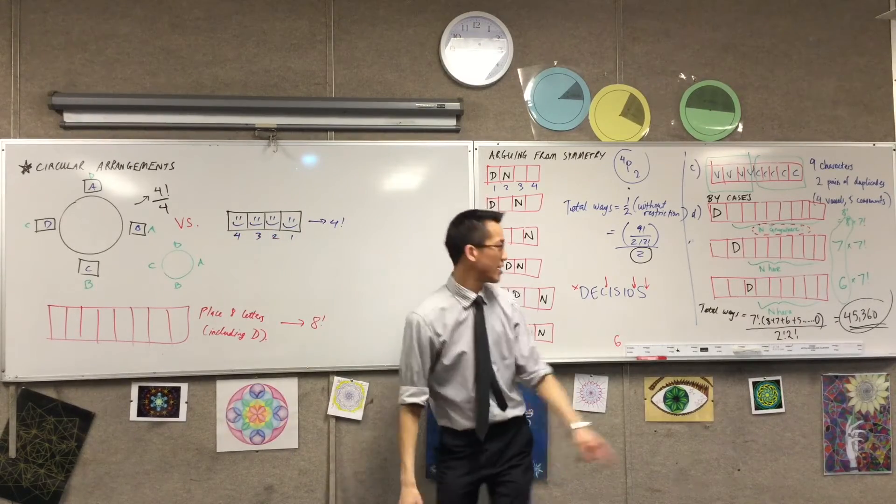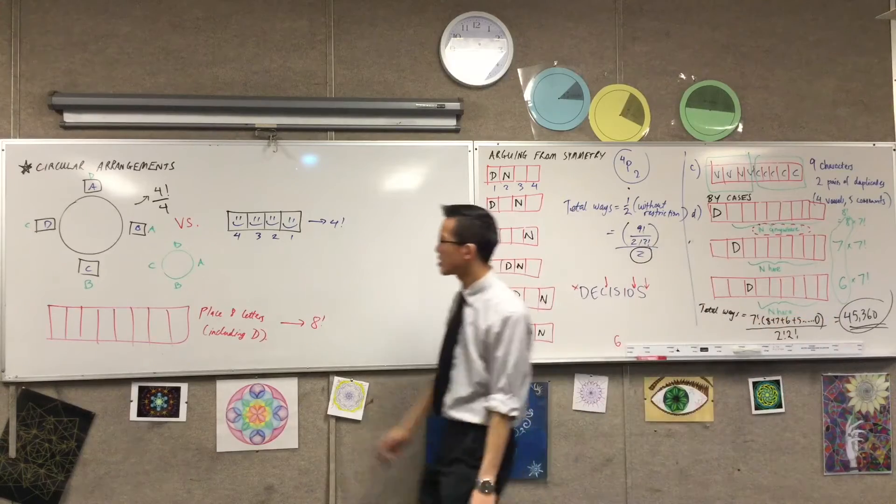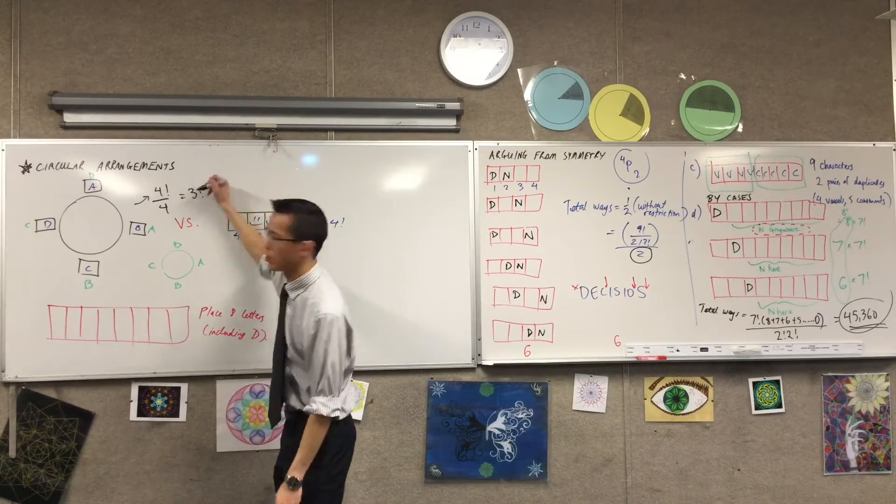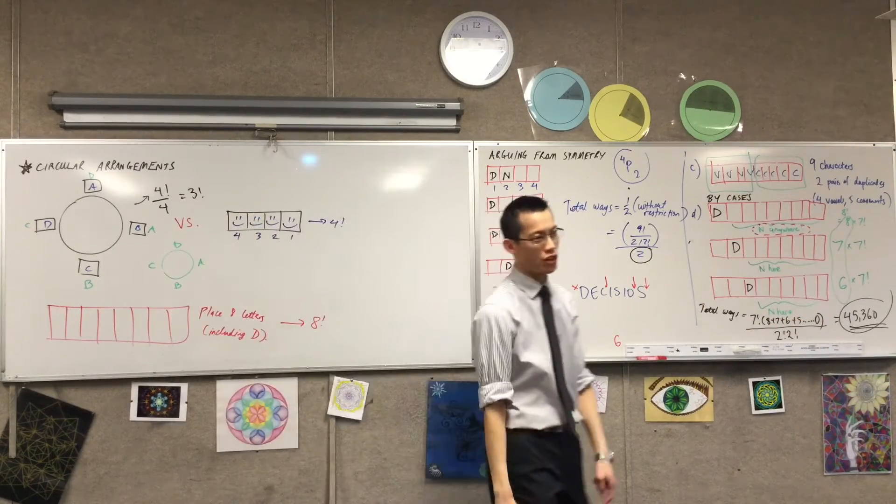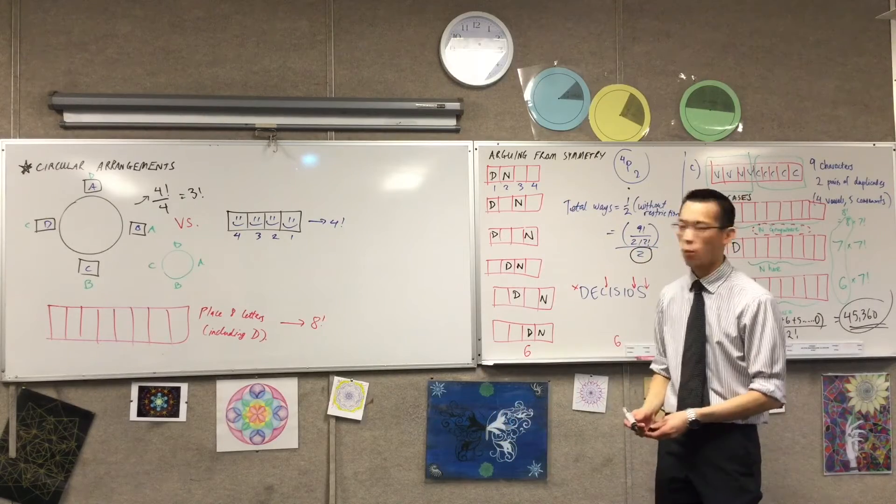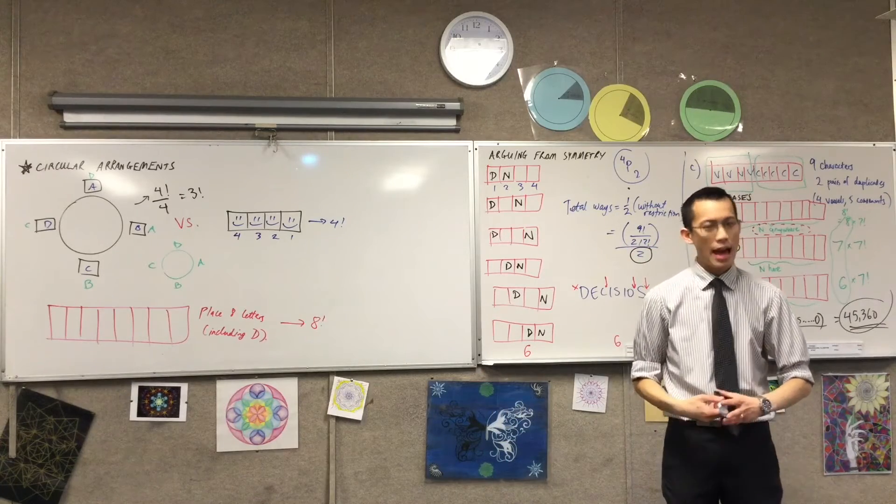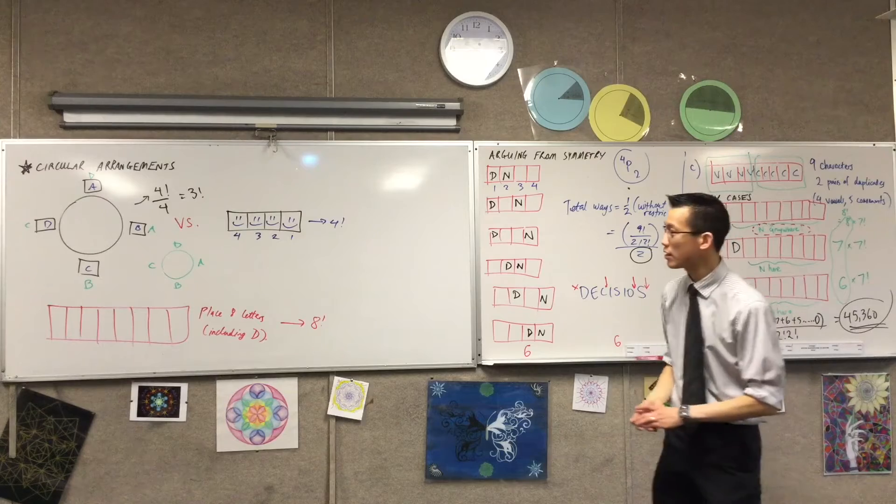However, then you'll notice, in the same way that we did here, you're like, well, that's just going to be three factorial. Instead of n factorial, it'll be n take away one factorial. Now why would that be? How can that unlock a helpful way to think about this?